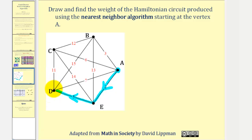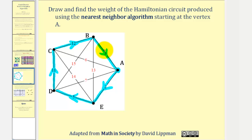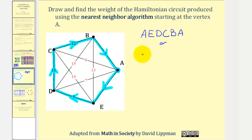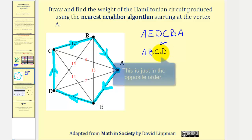From D, we have two choices. We can go from D to C with a weight of eleven, or D to B with a weight of fifteen. So we'll go from D to C. Then from C we have to go to B, and from B we return to A. So the Hamiltonian circuit found using the nearest neighbor algorithm would be A, E, D, C, B, A, which is equivalent to A, B, C, D, E, A.